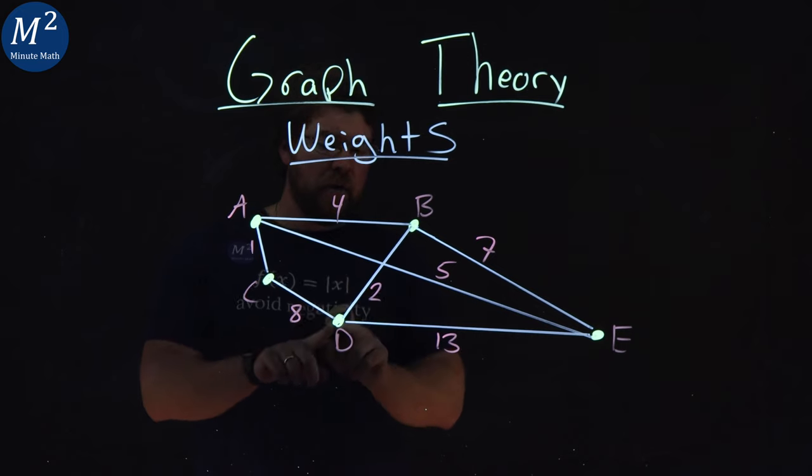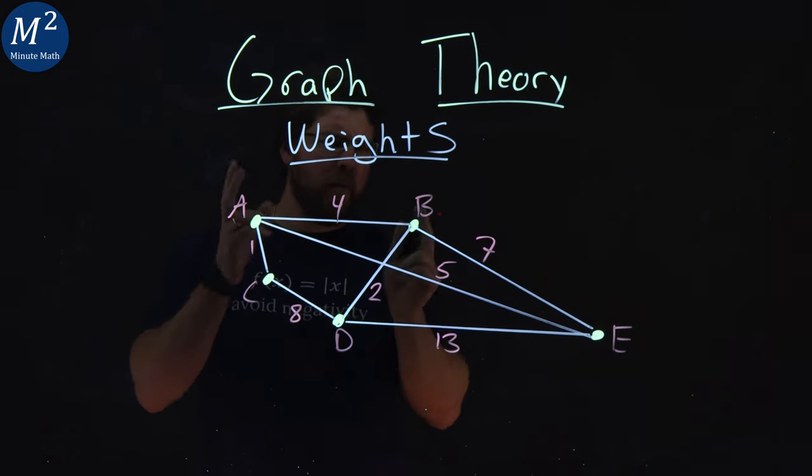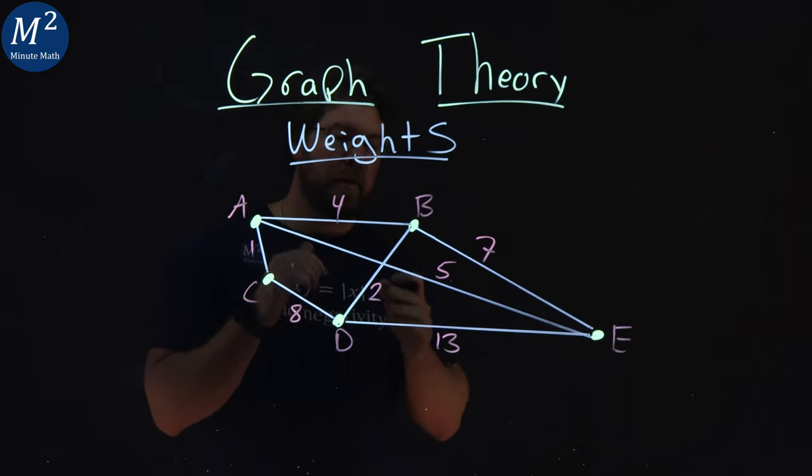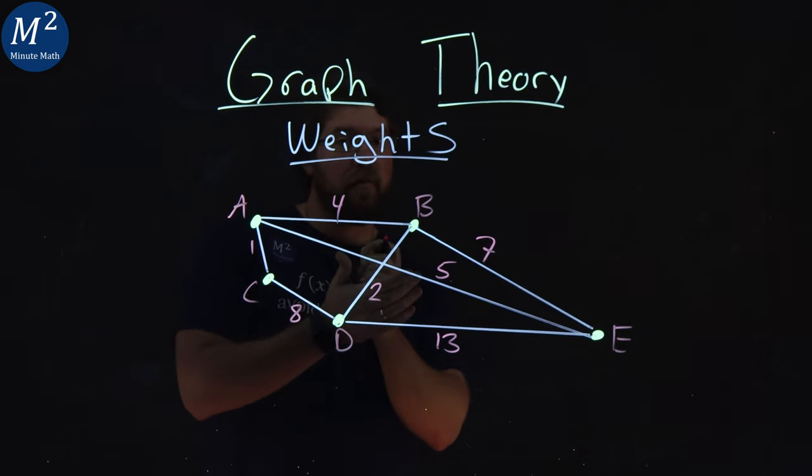Now be careful here with our graphs. Notice we have, in a way, an intersection between A, E, and B, D. There's no vertice there. That means there is no intersection there in graph theory.